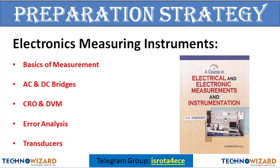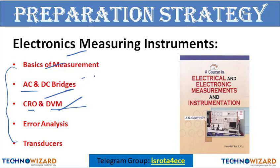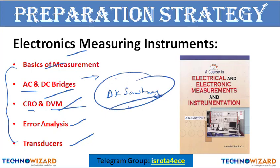Next is EMI — electronics measuring instruments. Only five topics: basics of measurement, AC and DC bridges, CRO (cathode ray oscilloscope), DVM (digital voltmeter), error analysis, and transducers. I have made videos on AC and DC bridges on my channel. The best book for this is AK Sawhney — all concepts related to DC bridges, AC bridges and other topics are explained in the best possible manner.